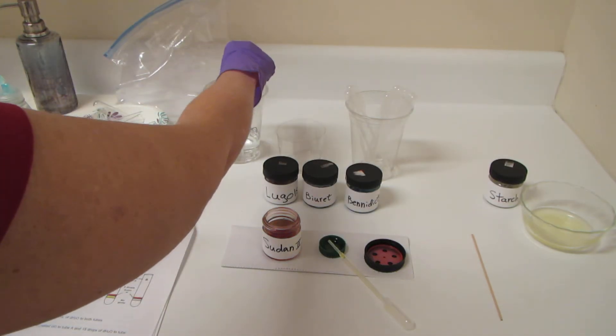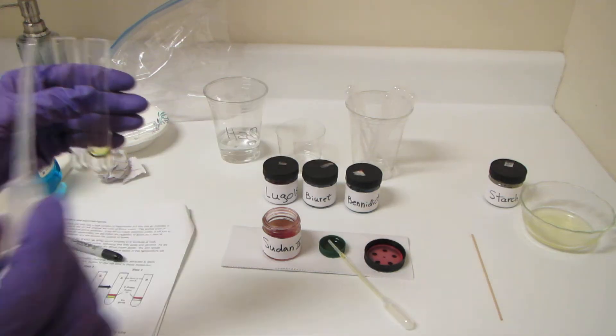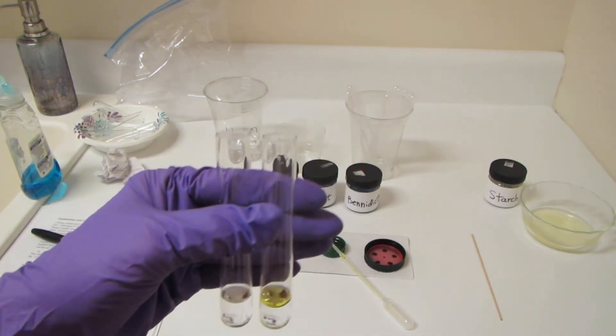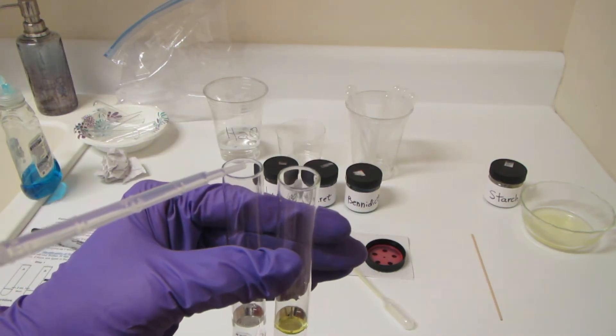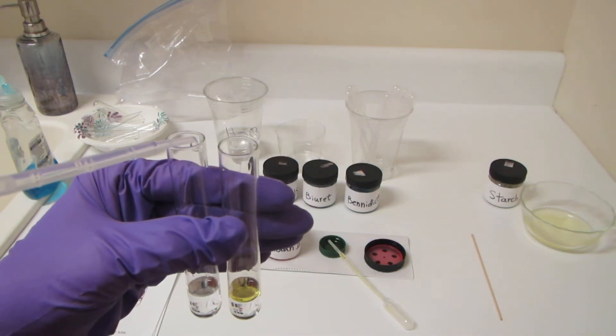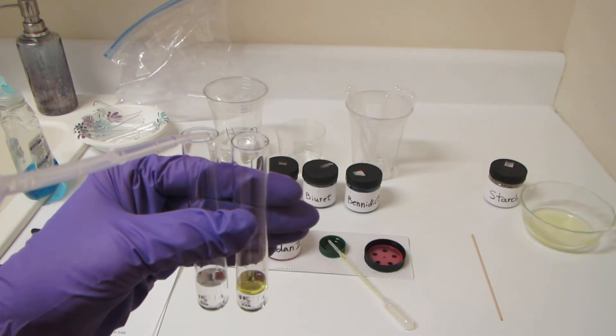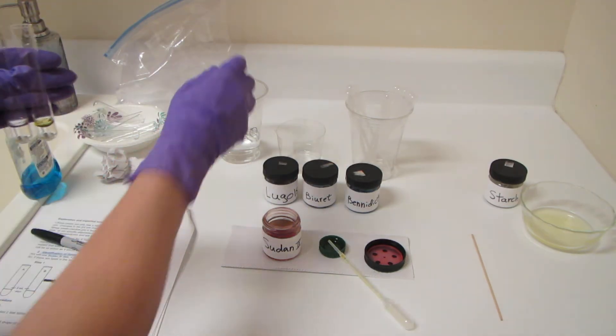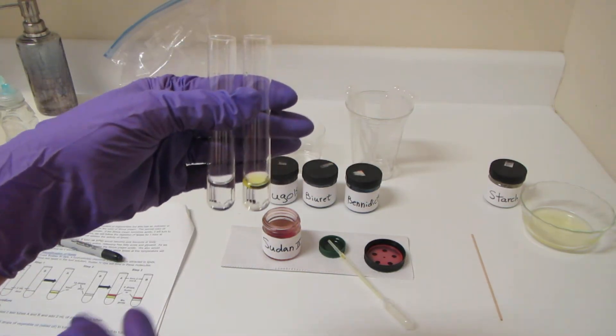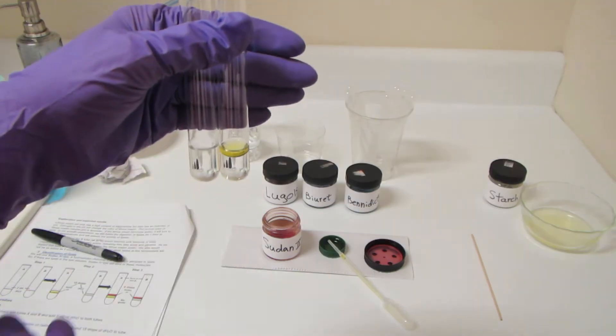Now, to make this perfectly even steven, the tube that does not contain the vegetable oil, I'll put 15 drops of water in. So now, both of these tubes contain the same amount of liquid.